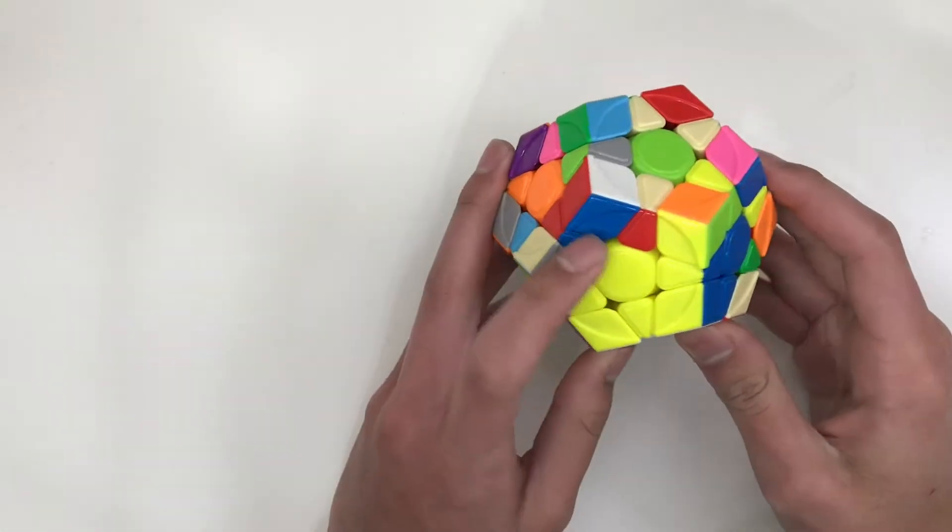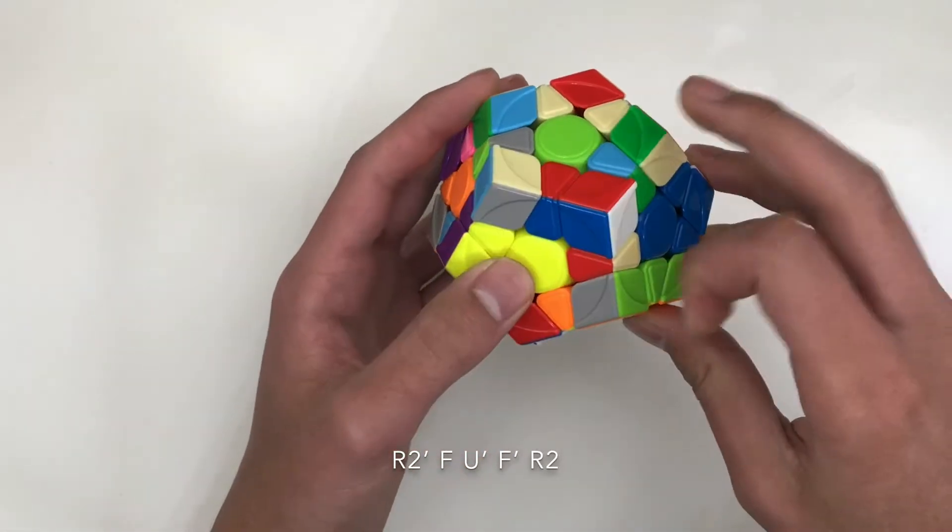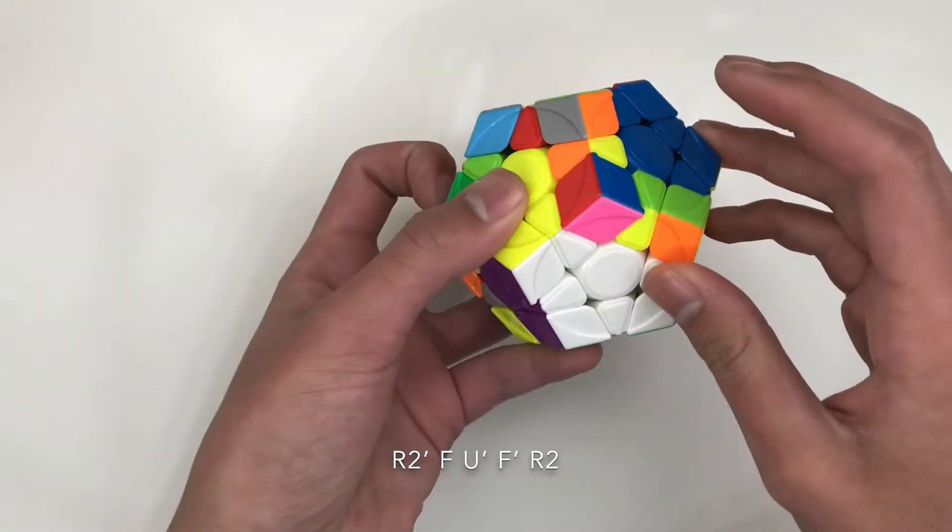When you're inserting this pair right here into a slot that's over here, you can do R2', F, U', F', R2.